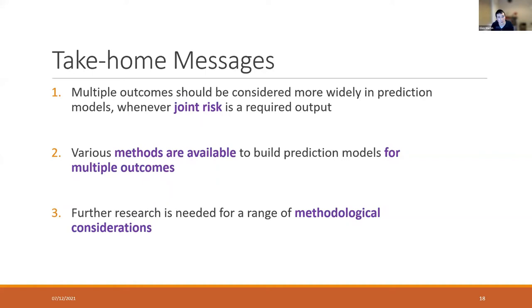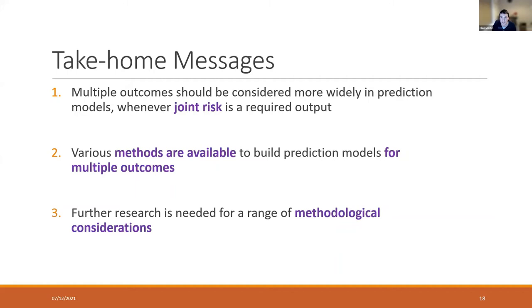To sum up: multiple outcomes should be considered more widely in risk-prediction modelling, especially when we're interested in joint risk. There are many methods available to do that, but there's a disconnect between the statistics world and the prediction modelling world that needs to be bridged through methods research and guidance papers. Hopefully some of my work can try and tackle that. Thank you very much.